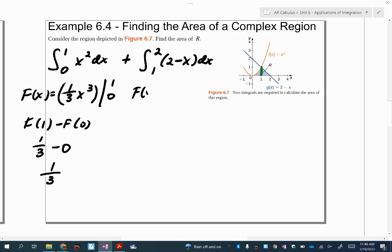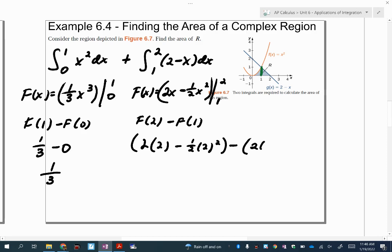Okay, this one, this antiderivative is going to be, let's see, that's 2x and then this is going to be minus 1 half x squared. Okay, and that's going to be evaluated at 2 and 1. So we're going to do f of 2 minus f of 1. So let's see, 2 times 2 minus 1 half times 2 squared, whatever that is, minus 2 times 1 minus 1 half times 1 squared.